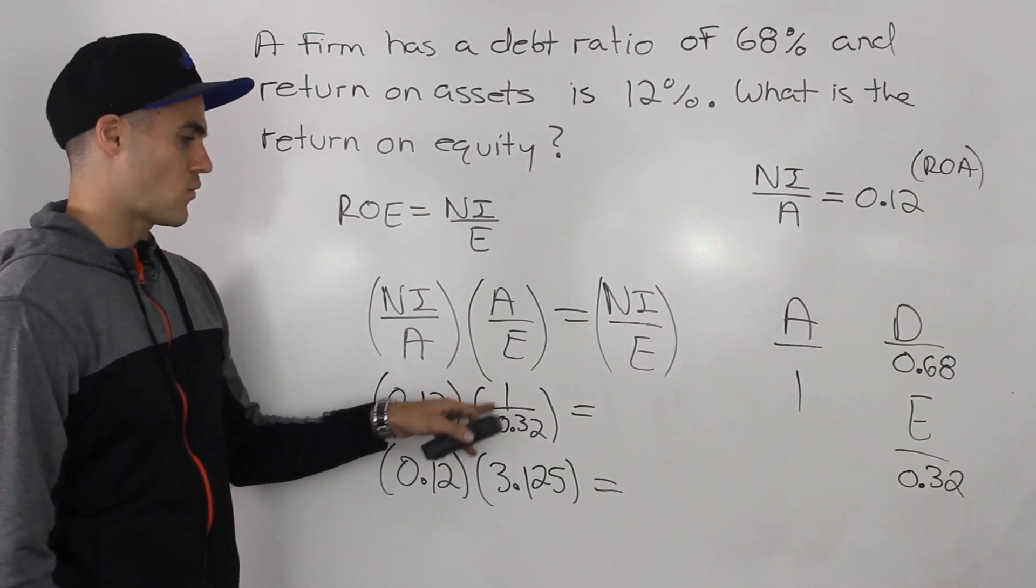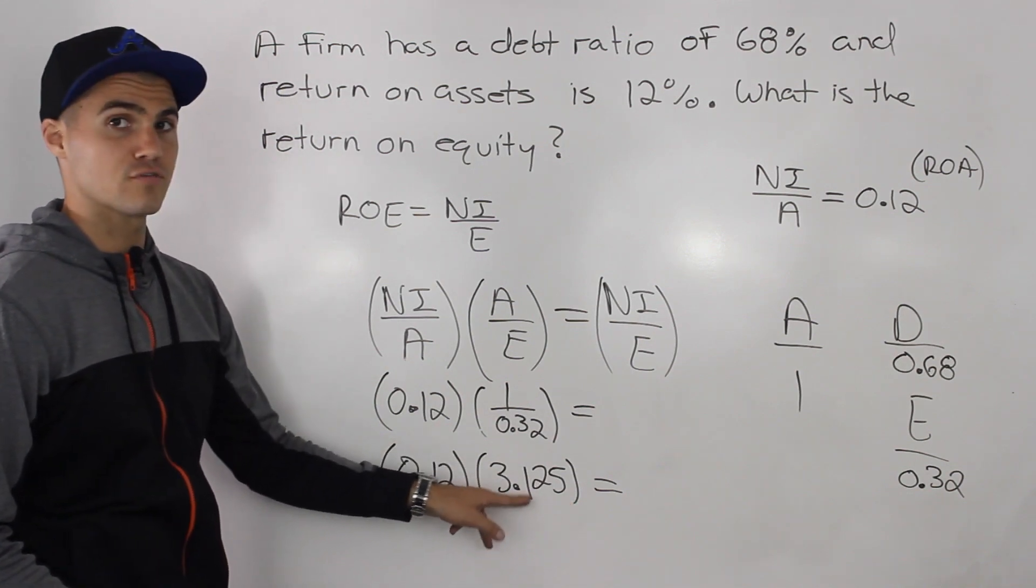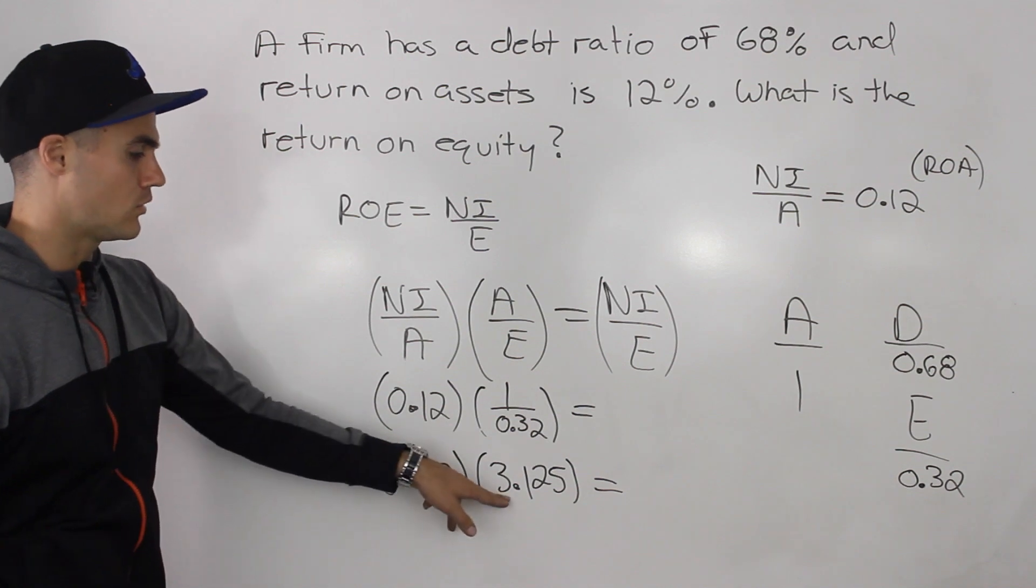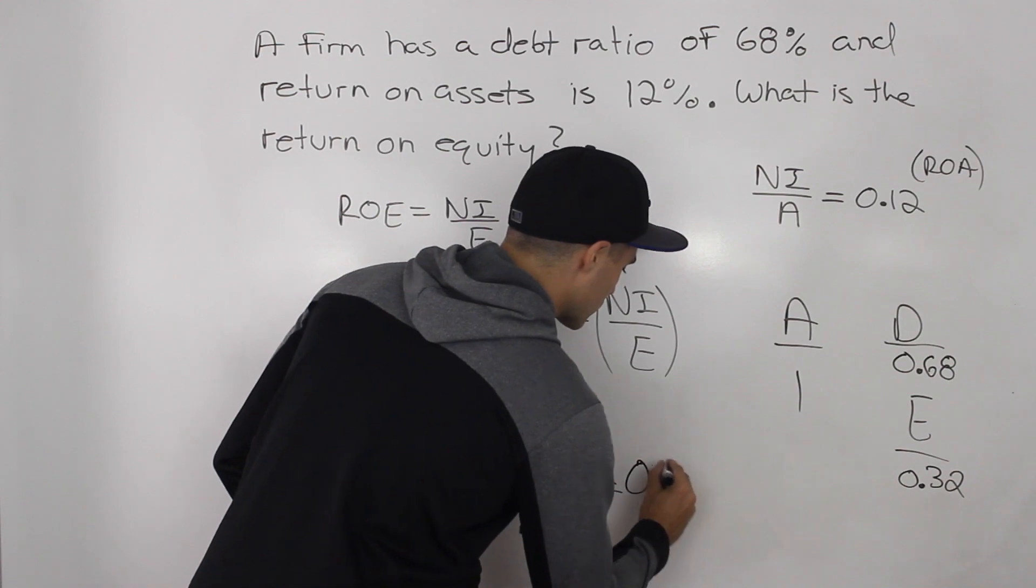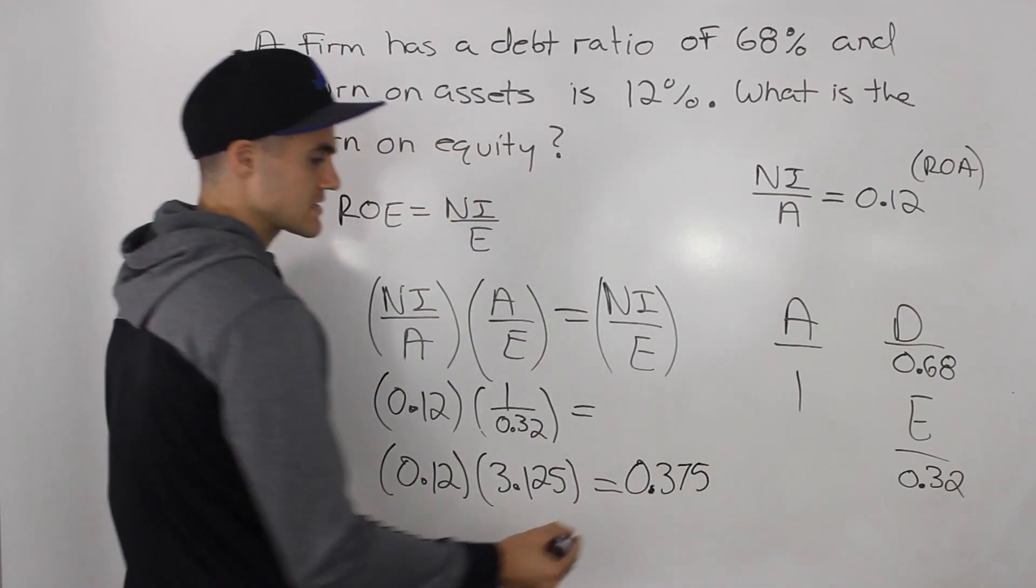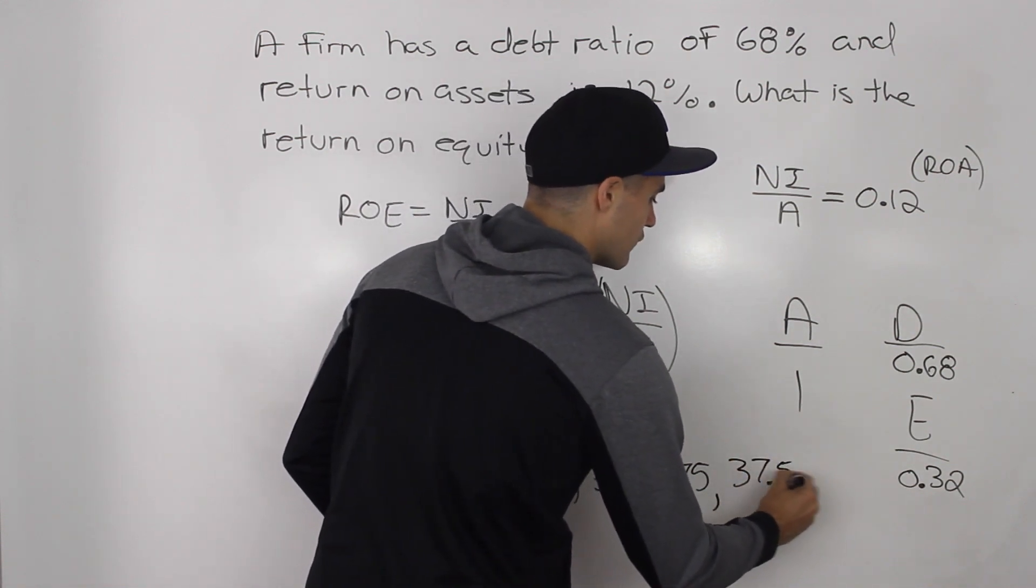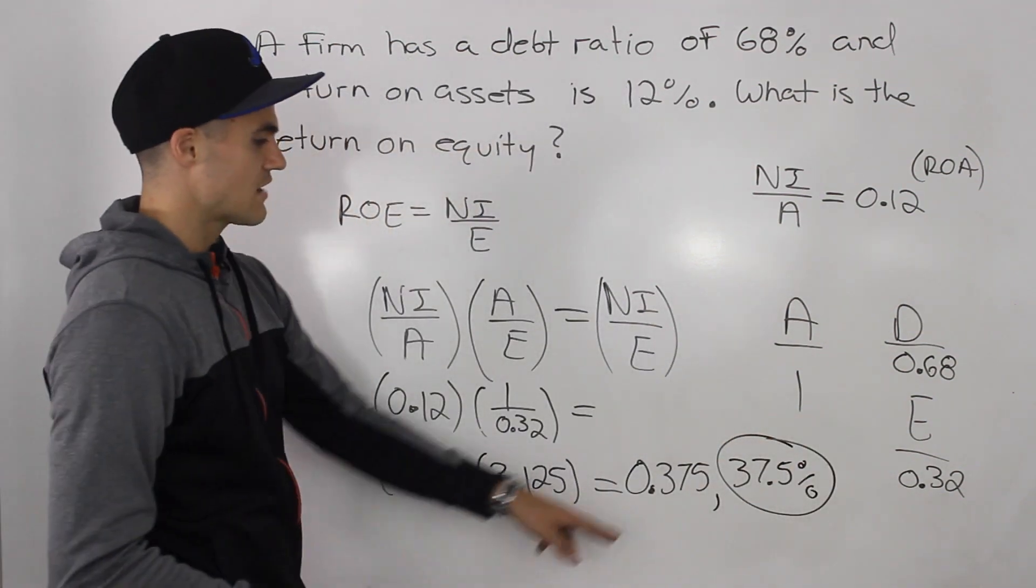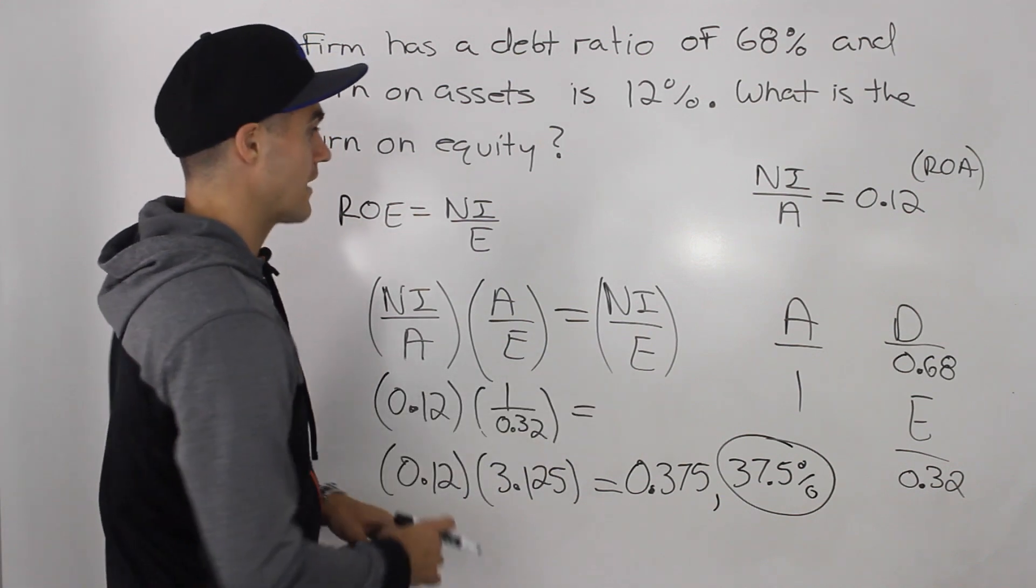And now when we multiply these two, we would end up getting our net income over equity ratio. And when we take this one divided by 0.32 in our calculator, we end up getting 3.125 in the brackets. And then we can take 0.12, multiply it by 3.125. And that gives us 0.375. Or if you want to express it as a percentage, 37.5%.